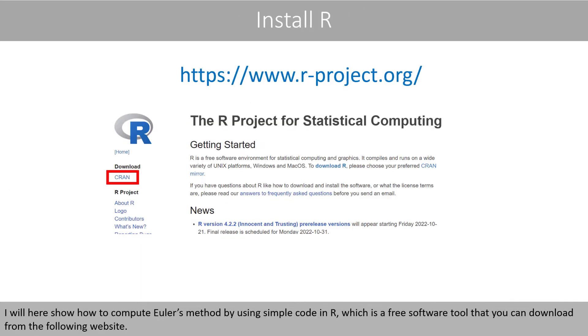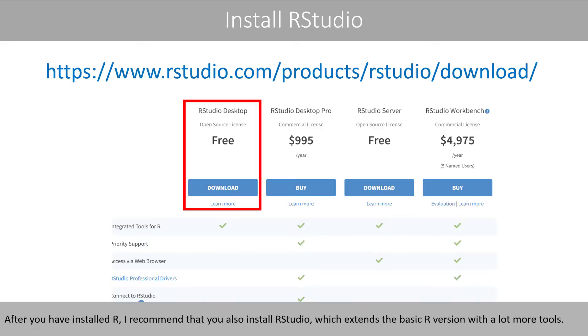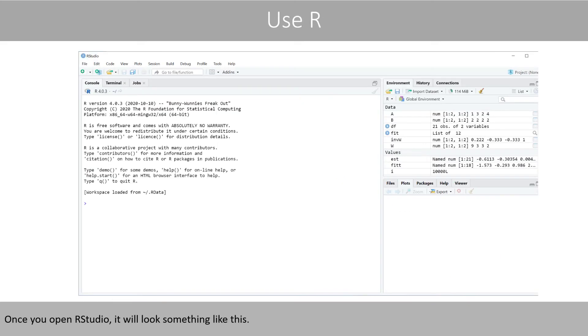I will here show how to compute Euler's method by using simple code in R, which is a free software tool that you can download from the following website. After you have installed R, I recommend that you also install RStudio, which extends the basic R version with a lot more tools.